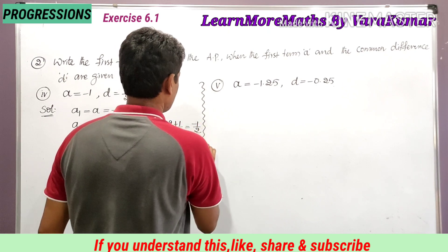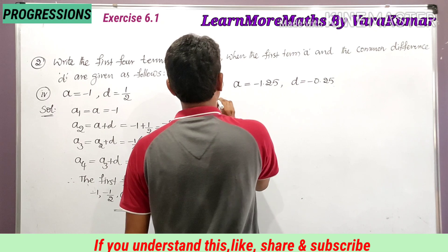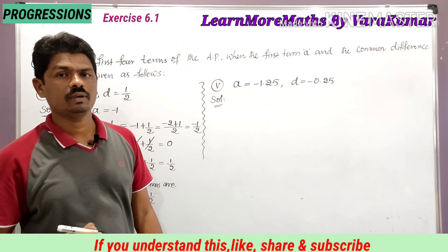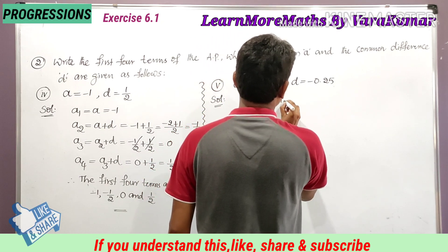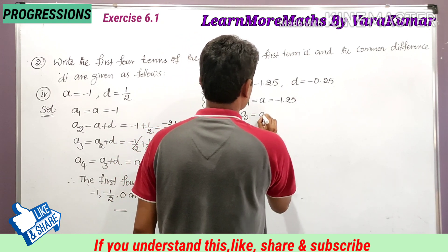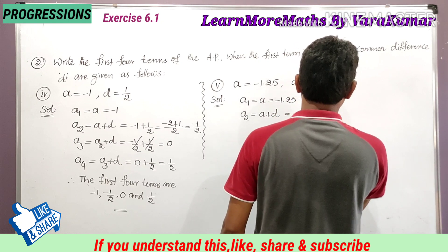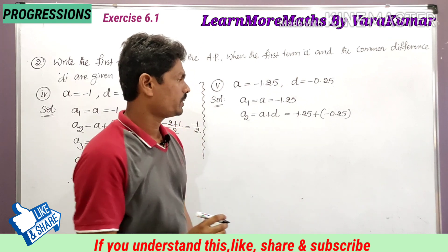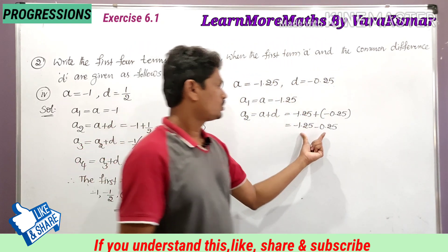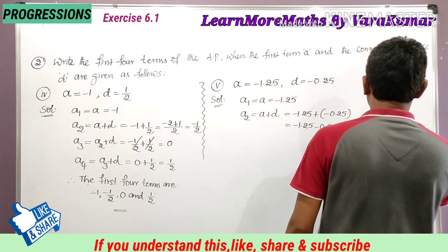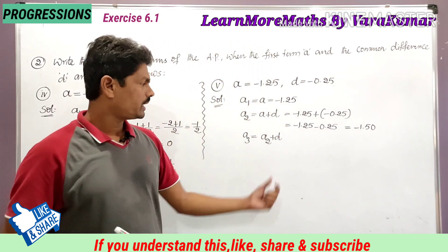In the fifth bit, a is equal to minus 1.25 and d is equal to minus 0.25. The first term a1 is equal to a, which is minus 1.25. The second term a2 is equal to a plus d, so minus 1.25 plus minus 0.25. Since plus into minus gives minus, it becomes minus 1.25 minus 0.25, which is minus 1.50.